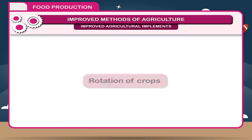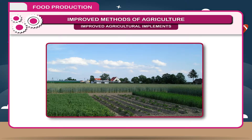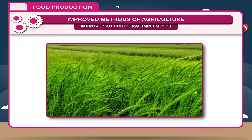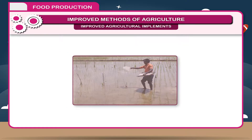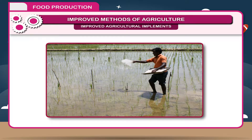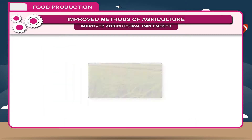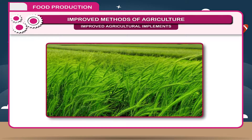Rotation of crops is one of the most important and old agricultural methods. If the same crop is grown continuously, the yield of crops is reduced. This is because the plants get nutrients from the same level of soil and ultimately particular nutrients are used up. This deficiency can be overcome by rotation of crops.